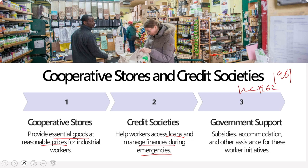The Indian Labour Conference 1962 specifically adopted a scheme for setting up consumer cooperative stores in all industrial establishments including plantations and mines employing around 300 or more workers. The employer was to give assistance in the form of share capital, working capital, free accommodation, and other amenities including loans. The Industrial Truce Resolution 1962 aimed at keeping prices of essential commodities low by opening sufficient fair price shops and cooperative stores. Government support in terms of subsidies, accommodation, and other assistance for worker initiatives also adds to this agenda.